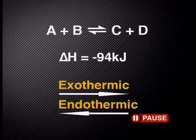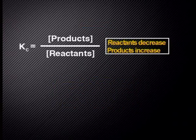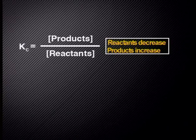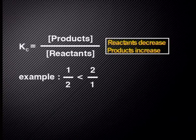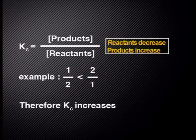Can you explain what will happen to the Kc if we decrease the temperature? If we decrease the temperature, the exothermic reaction will be favored — this is the forward reaction. This produces more products, so the concentration of products increases and the concentration of reactants decreases. Here the products increase from 1 to 2 and the reactants decrease from 2 to 1. Since 2 is bigger than one-half, the overall Kc value will increase.